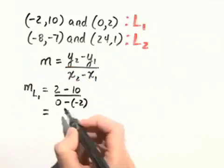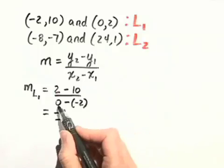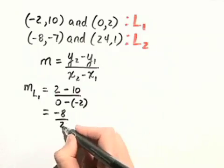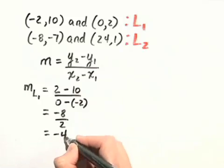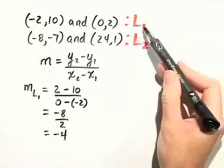Let's simplify this. We have 2 minus 10, or negative 8, over 0 minus negative 2, which is 0 plus 2, or 2. So negative 8 divided by 2 is negative 4. So we know now that the slope of our first line is negative 4.